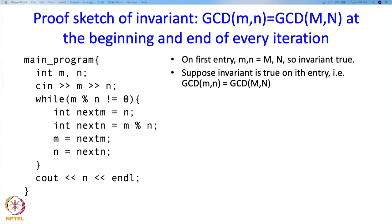Let us worry about the second iteration or in general the ith iteration. We are going to assume that the invariant is true at the beginning of some ith iteration and prove that it will hold at the end of that ith iteration. Since we have proved it is true at the first iteration, if we prove it for general i, then the fact that it is true at the beginning of the first iteration will guarantee it is true at the end of the first iteration. Being true at the end of the first iteration is the same as being true at the beginning of the second iteration, and so on. So we just have to assume it is true on the ith entry and derive that it must be true at the end of the ith iteration.